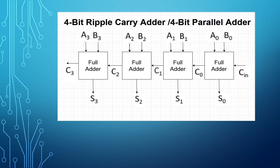A full adder can add two single-bit inputs and it produces an extra carry bit generated from its previous stage, and it produces outputs as sum and carry. Suppose if you want to add multiple n-bit binary sequences, we require multiple cascaded full adders. So the n-bit parallel adder is nothing but a cascade of full adders.